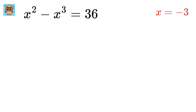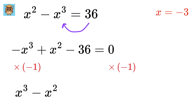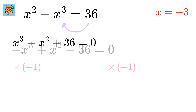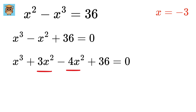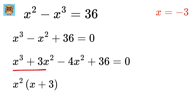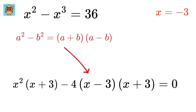In order to find the other two roots, we will factorize this equation. First, take 36 to the left-hand side and rearrange to get minus x cubed plus x squared minus 36 equals 0. Multiplying both sides by minus 1 gives x cubed minus x squared plus 36 equals 0. In order to factorize using x plus 3, rewrite this as x cubed plus 3x squared minus 4x squared plus 36 equals 0. Then take x squared common to get x squared times x plus 3, and take minus 4 as common to get minus 4 times x squared minus 9, which factors as x minus 3 times x plus 3.